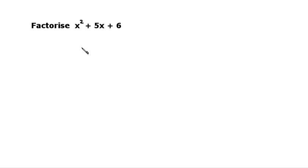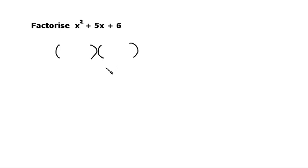When you factorise a quadratic expression, you're going to put it into two brackets. So we're going to factorise the expression x squared plus 5x plus 6. We can start by drawing two brackets. Factorising is the opposite of expanding or multiplying out brackets, so you might have learnt how to multiply out two brackets using the FOIL method. We start off by looking at our x squared — x squared is made up of x times x, so we put an x at the beginning of each bracket.